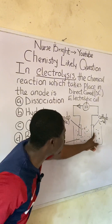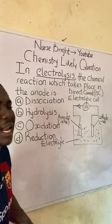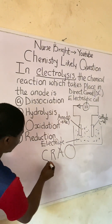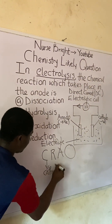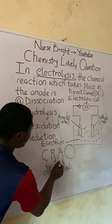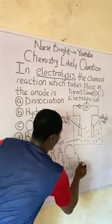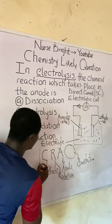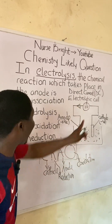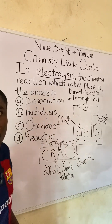There are processes that occur at these two electrodes — the anode and cathode — which are the chemical reactions asked about in this question. Remember this acronym: CROA. C stands for cathode, R stands for reduction, O stands for oxidation, and A stands for anode. C and R go together, and A and O go together. So the cathode always undergoes reduction, and the anode always undergoes oxidation.